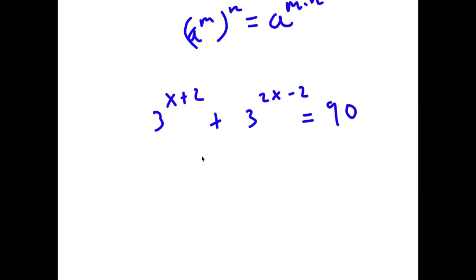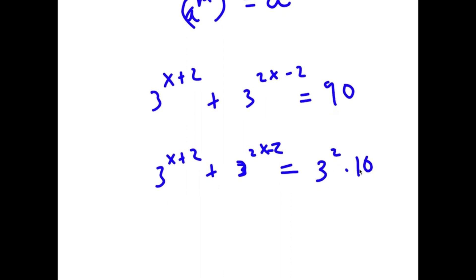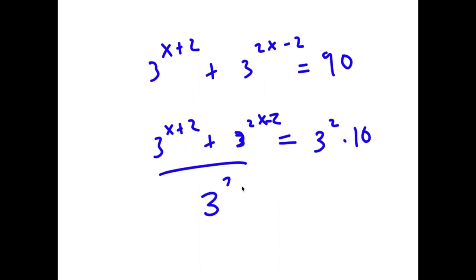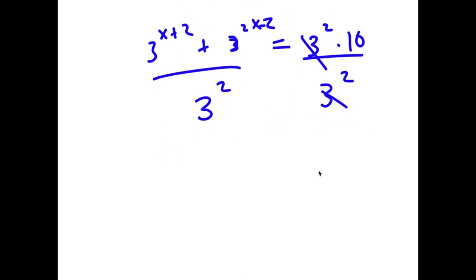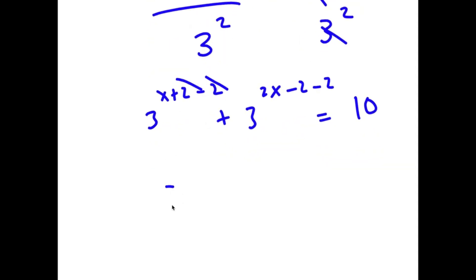Now, 90 is equal to 3 to the power of 2 times 10, since 9 times 10 is 90. I'm going to divide both sides by 3 to the power of 2. So these two cancel out, and 3 to the power of x plus 2 over 3 to the power of 2 is the same as 3 to the power of x plus 2 minus 2, plus 3 to the power of 2x minus 2 over 3 to the power of 2, which is 3 to the power of 2x minus 2 minus 2, equal to 10. The 2 and negative 2 cancel, so I have 3 to the power of x plus 3 to the power of 2x minus 4 is equal to 10.